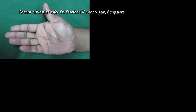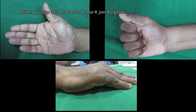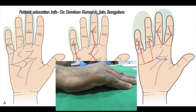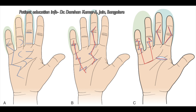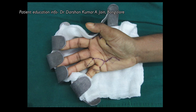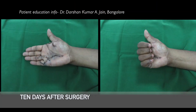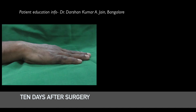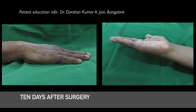I'll show you a few cases. Case one: an individual has the problem in the ring and little fingers mainly. He undergoes surgery. These are the incisions which are made, and this is 10 days after the surgery — he is able to resume his activities. This is the kind of range of movement you can see after the release.